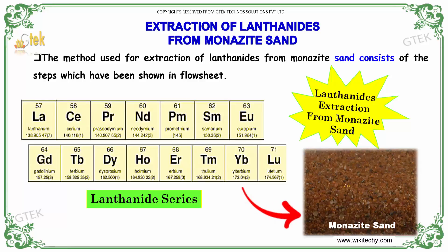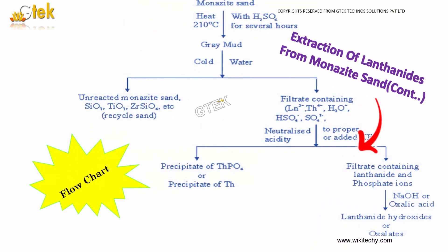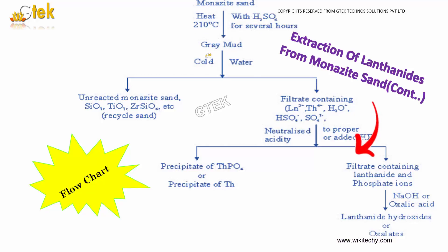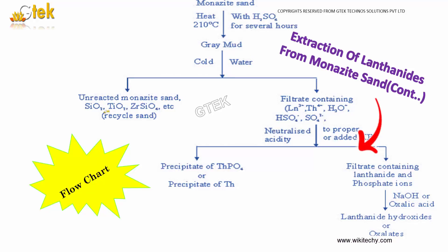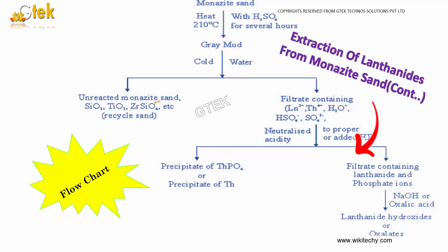These are the lanthanide series. Here is the monazite sand. The monazite sand is heated to 210 degrees Celsius in the presence of sulphuric acid, along with cold water. The unreacted monazite sand with SiO₂, TiO₂, and ZrSiO₄ are called recycled sand and are filtered separately.